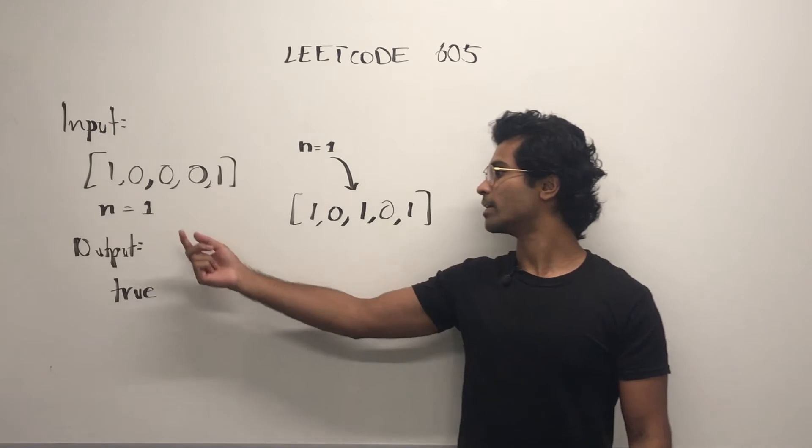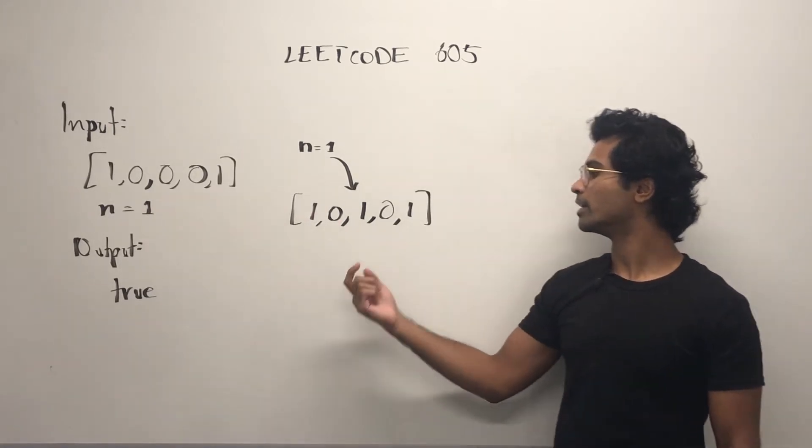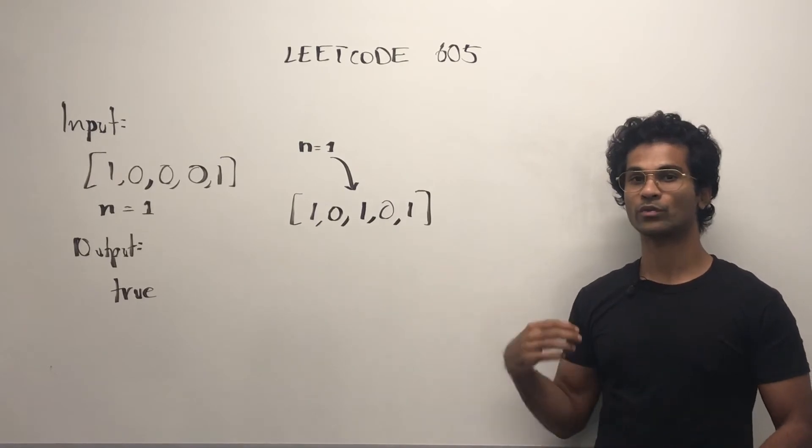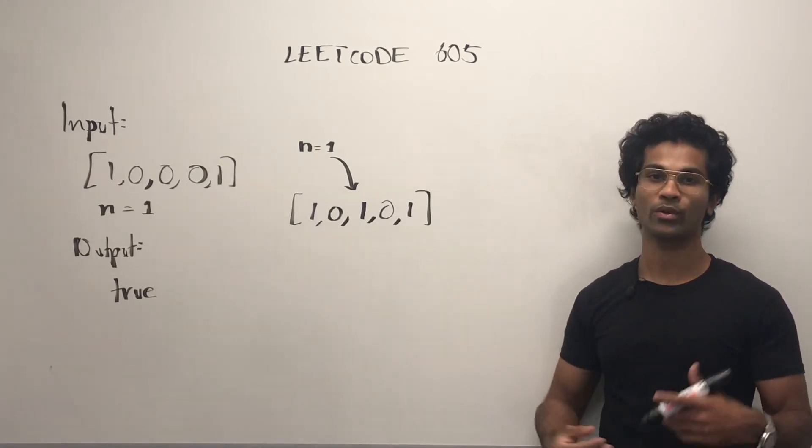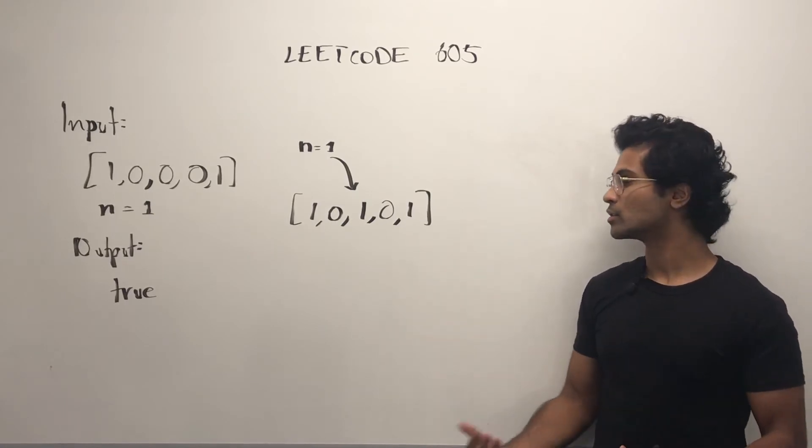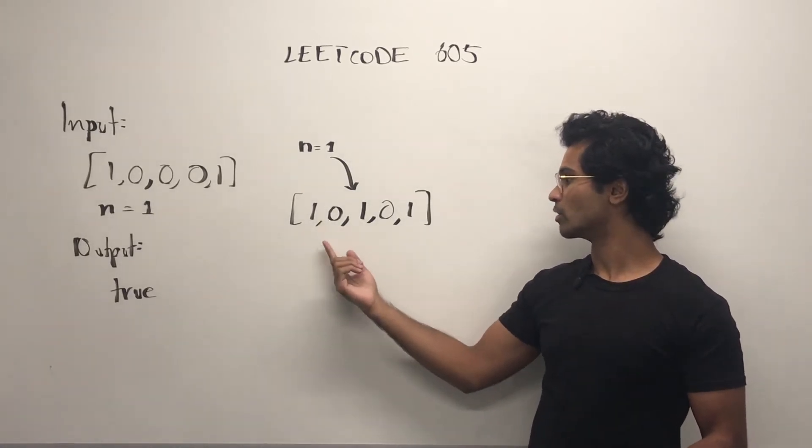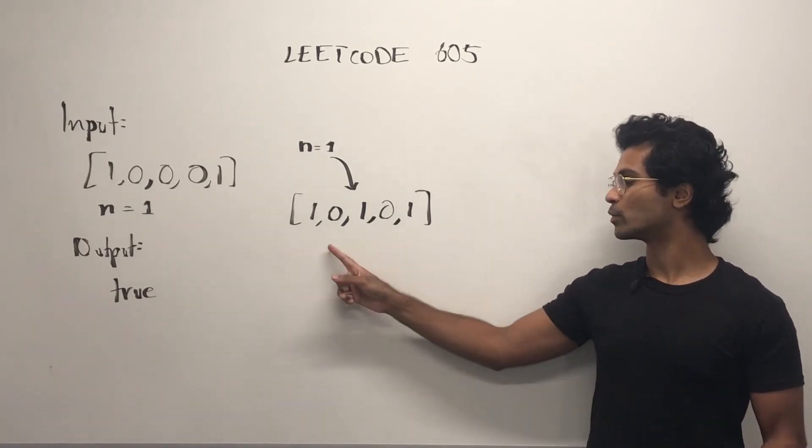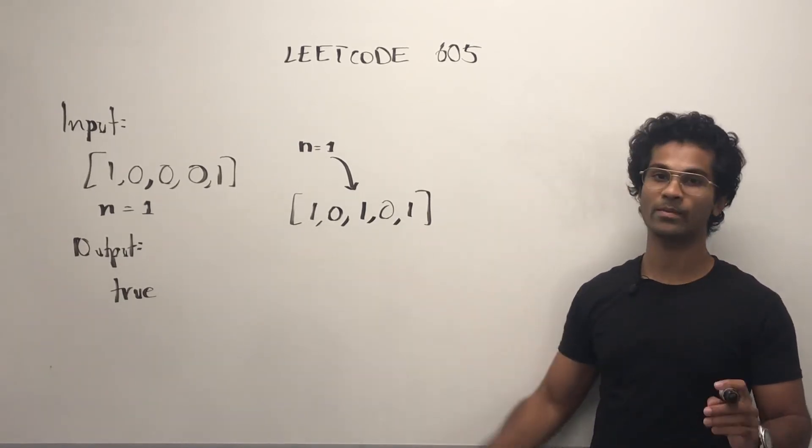So in our case, if n is equal to 1, we can put it in between the zeros. What we're trying to do is replace the zeros with 1 such that there is no consecutive ones. So here we have 1, 0, 1, 0, 1, and this is going to be true because we're allowed to do that. We have three zeros and we can put 1 in between.